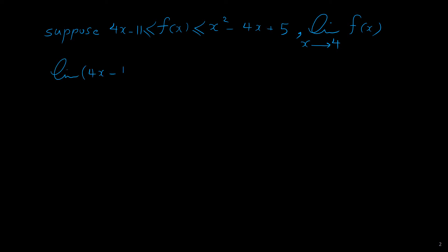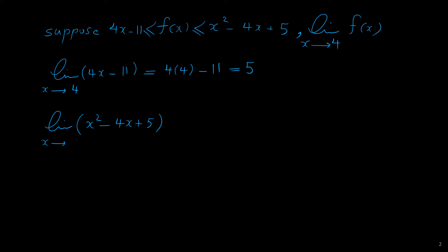But because we know f of x is between these two functions, we can find the limits of those functions. The limit of 4x minus 11 as x approaches 4 equals 4 times 4 minus 11, which is 16 minus 11, equals 5. Now the limit of x squared minus 4x plus 5 as x approaches 4: by direct substitution we get 4 squared minus 4 times 4 plus 5, which also equals 5.